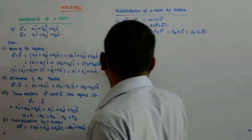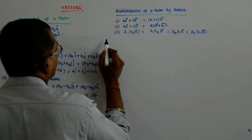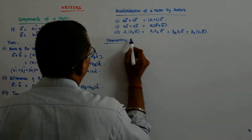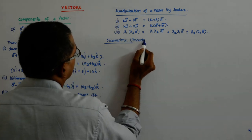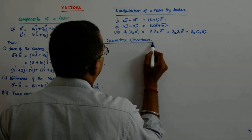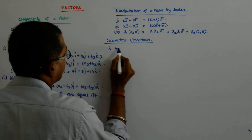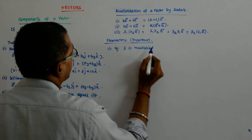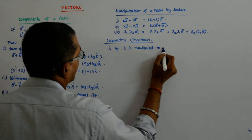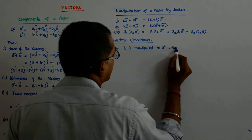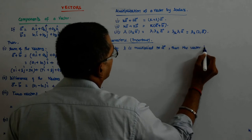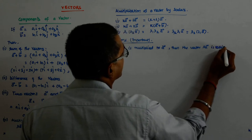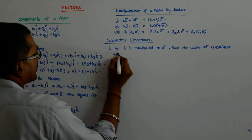Do we get that point? Now, once we understand this, there are certain observations that you should keep in mind. Very important. The first thing is that if lambda is multiplied to A, then the vector lambda A is collinear with A.